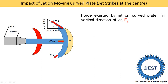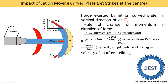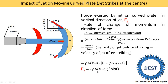Next we find Fy — the force exerted by the jet on the curved plate in the vertical direction. Similarly applying Newton's second law: mass per unit time into (velocity before striking in y minus velocity after striking in y). The jet strikes completely in the x direction, so the velocity before striking in y is zero. The velocity after striking in y is (v minus u) sin theta. So Fy = rho·A·(v minus u)·(0 minus (v minus u) sin theta) = minus rho·A·(v minus u)² · sin theta.